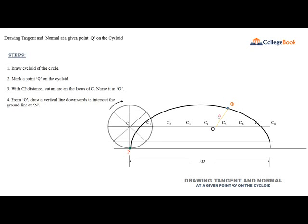Step 4: From O, draw a vertical line downwards to intersect the ground line at N. Step 5: Draw the line NQ. This will be the normal to the cycloid at the given point Q.